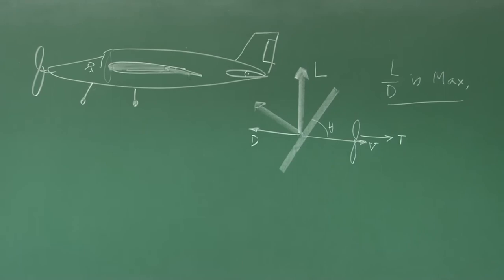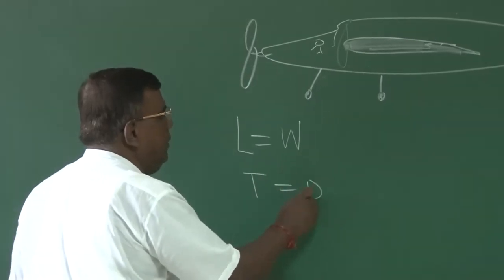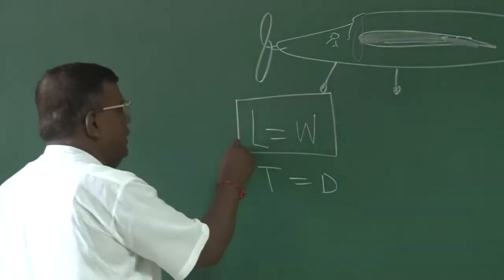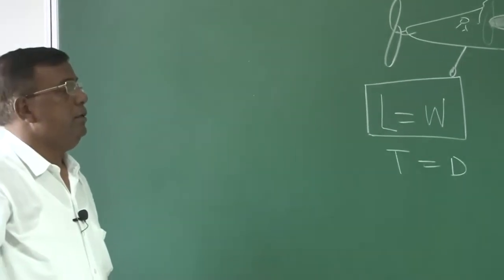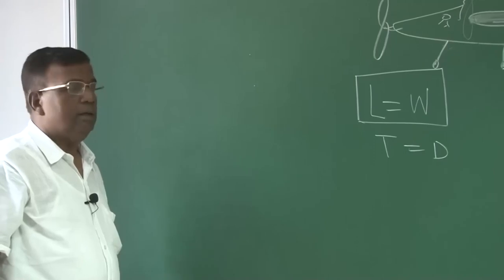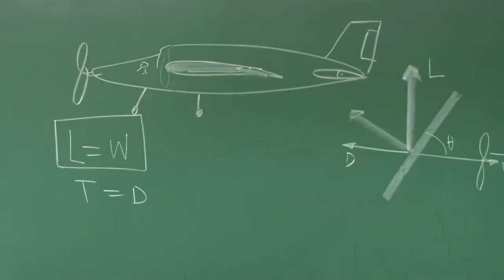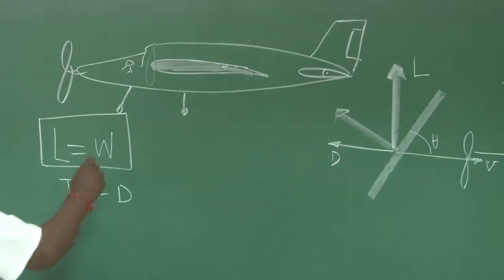Whenever we say the aircraft should produce lift equal to weight when flying at cruise, if I recall your performance lecture, we have these two popular equations: lift equal to weight and thrust equal to drag. How will a designer see the condition lift equal to weight? I need to have an airplane, I need to have a wing, because we have agreed that the wing is primarily responsible for generating lift. I need to have a wing specially designed so that it can generate lift at different altitudes and different speeds as per our requirements.